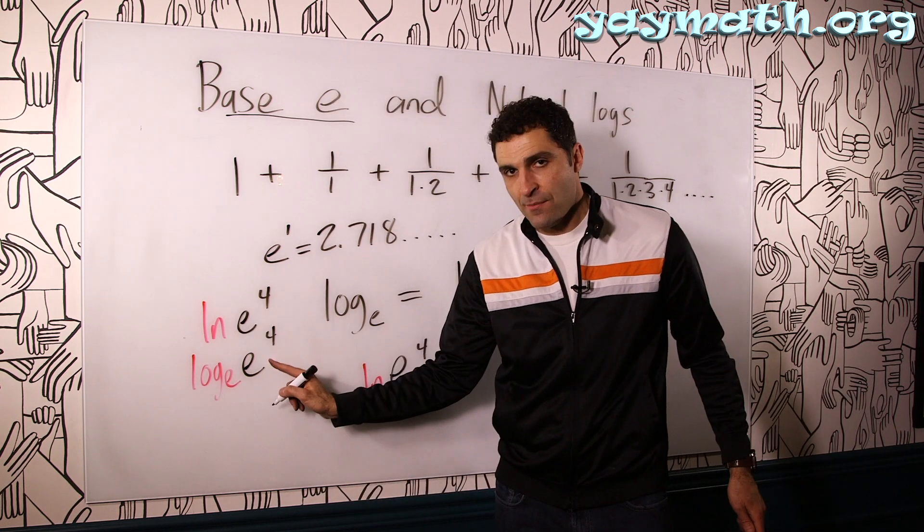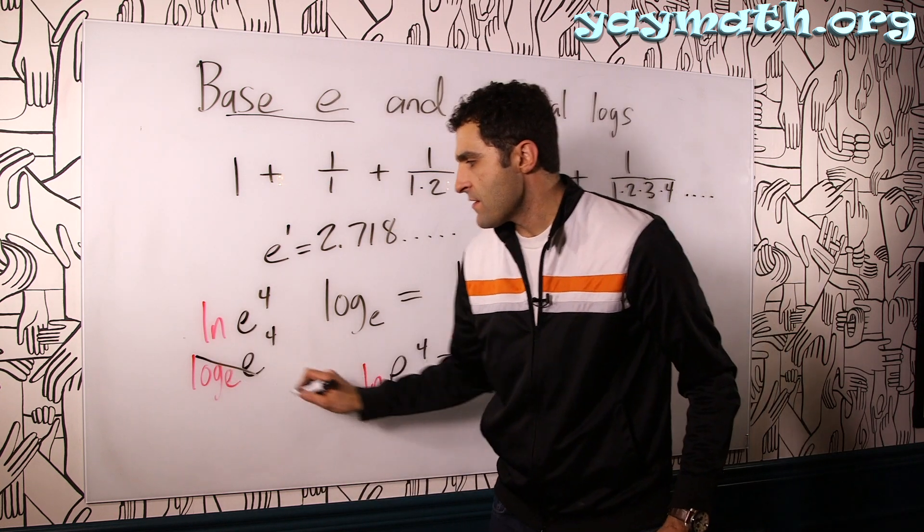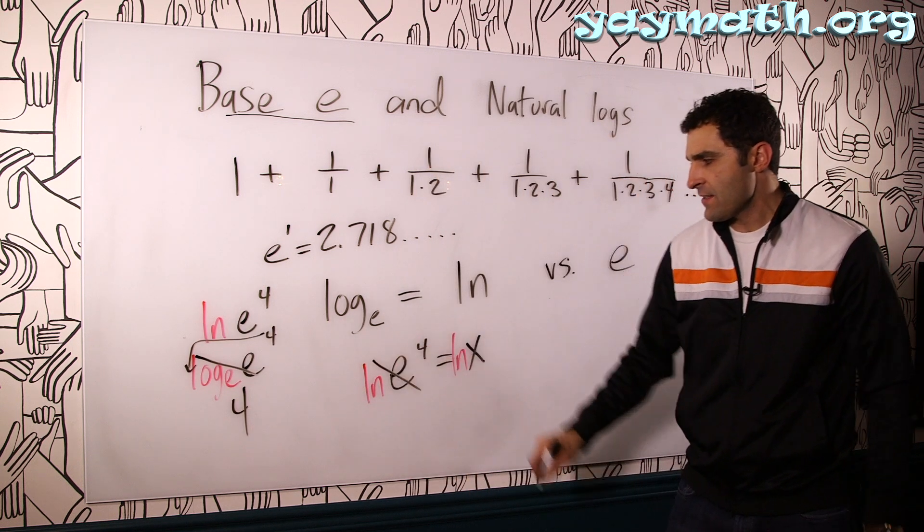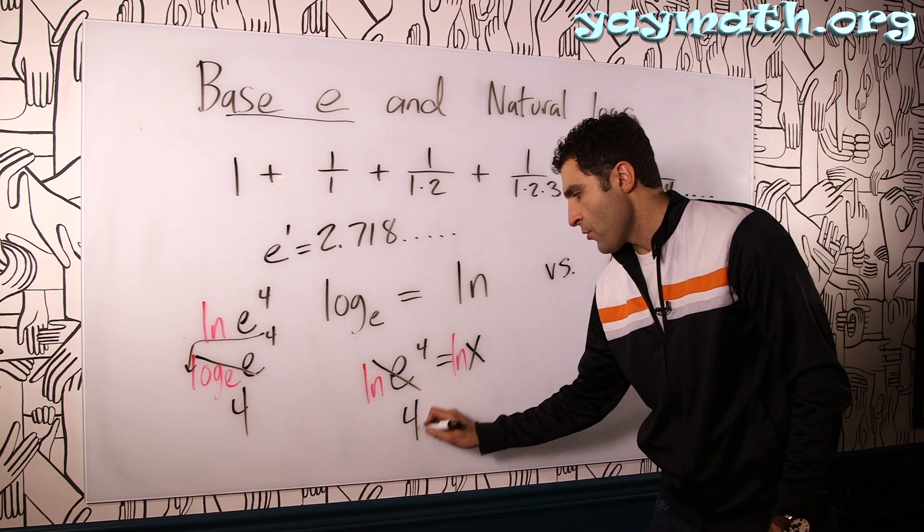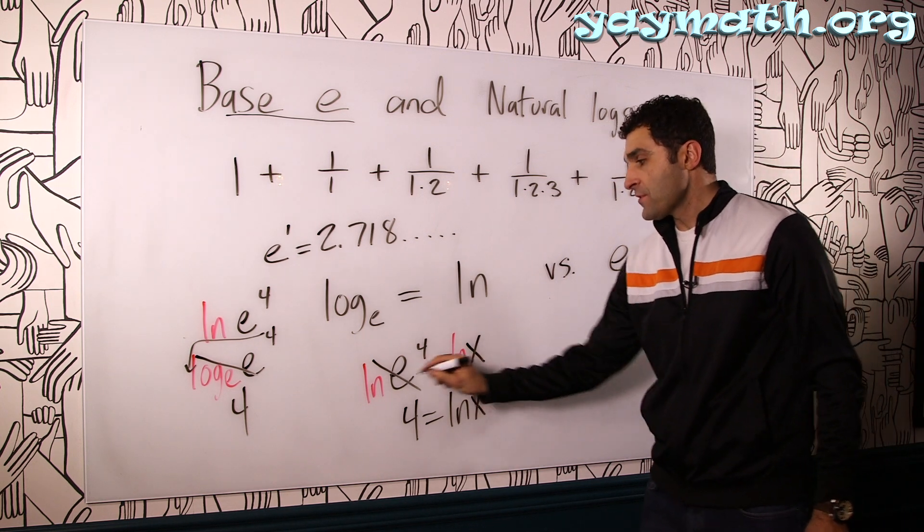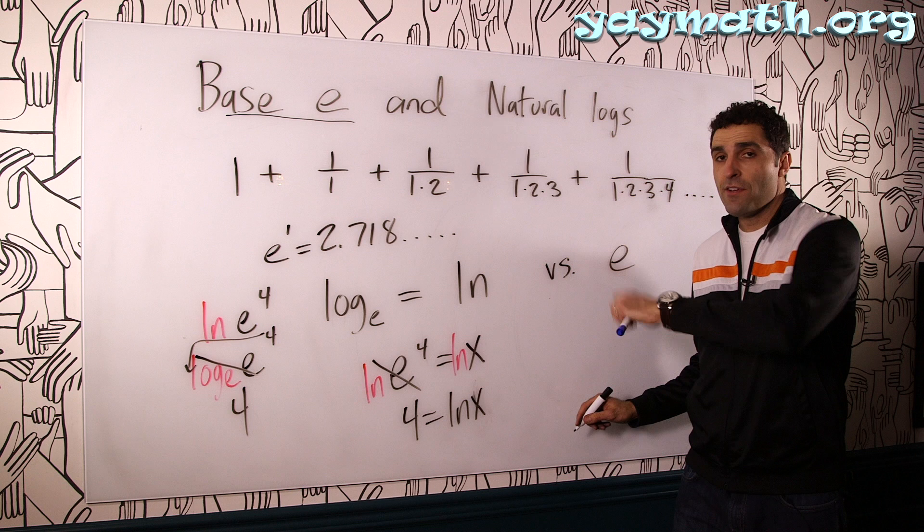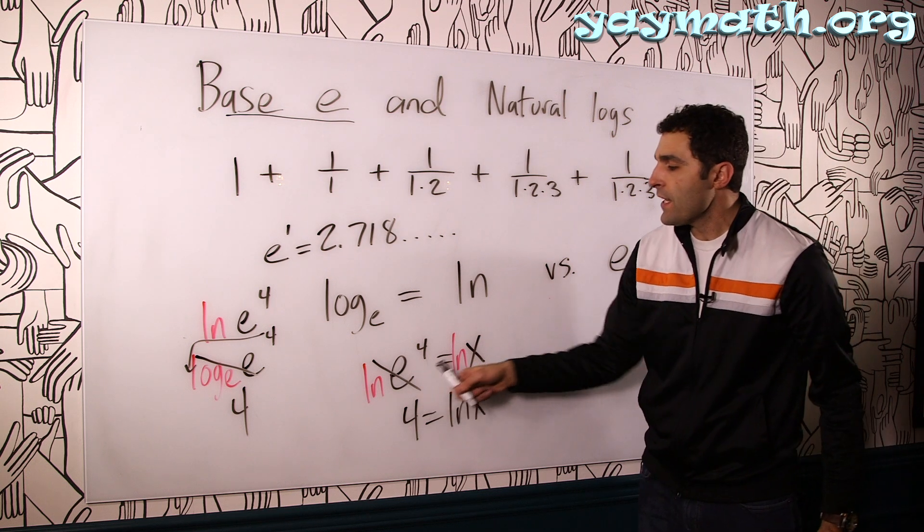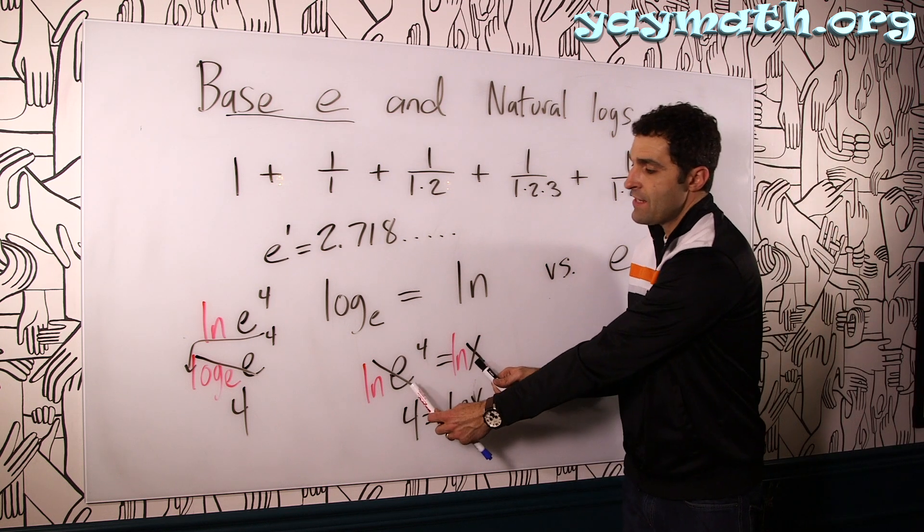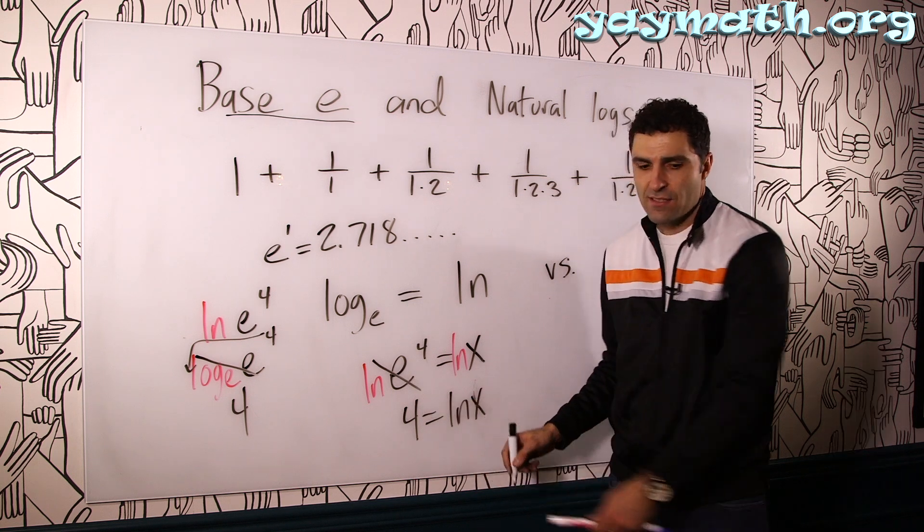So anytime the base and the number are the same, it becomes the number one. This is the number one. Four moves to the front. That's the number four. Basically, they cancel each other, right? So it becomes four equals LN x. This wouldn't be helpful to solve. We're going to show you some things to solve. This is just rewriting as a log equation. So it was given as an exponential. Rewrite as log.